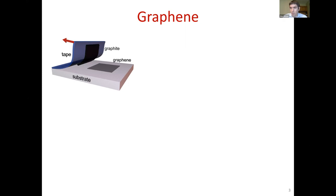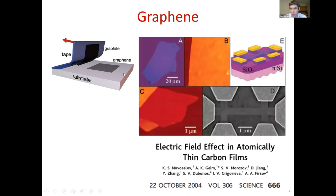Right now in my group, students are making graphene samples on a regular basis. With practice, within about an hour you can get very nice crystals. You put a crystal of graphite on scotch tape, press it against a substrate such as silicon oxide or glass, and once you peel off the tape, some graphene layers remain. These are images from the original Geim and Novoselov paper published in Science in 2004, showing a crystal of graphene — in this case, probably few-layer graphene.